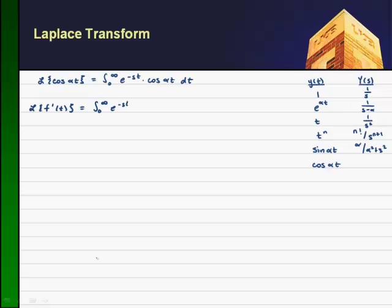So this is the integral of e to the minus st times f prime of t dt. As is typical with all these Laplace transforms, we're going to use integration by parts. In this case, let u equal e to the minus st, where du is going to be minus s e to the minus st dt. And with dv, I'll pick up the f prime of t dt, such that v reduces to f of t.